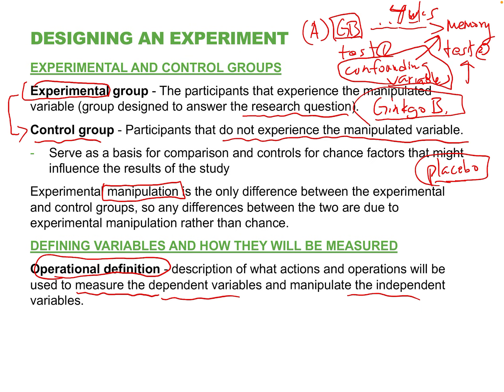An operational definition is basically how we measure something used in the study. For ginkgo biloba, many medications and supplements come in grams — there's a milligram measurement or a number of pills. That is an operational definition of ginkgo biloba. For memory, you can't just ask 'Is your memory good on a scale of one to ten?' That's not a good test. You give them a standardized paper-and-pencil test, and whatever score they get — that number — is an operational definition of memory. Every variable must be defined in a measurable way.